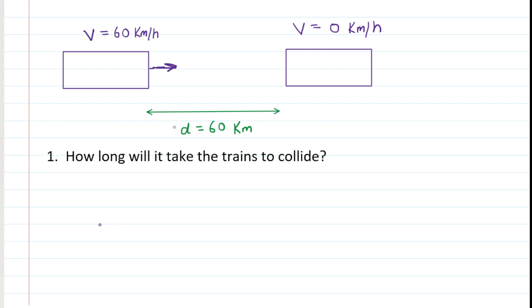you could use the equation speed is equal to distance divided by time. And if you multiply both sides of the equation by time to cancel it out on the right-hand side and then divide both sides by V in order to cancel V on the left-hand side, you would have time is equal to distance divided by speed. Well, if we plug in our distance of 60 kilometers and our speed of 60 kilometers per hour, of course, you would get one hour.